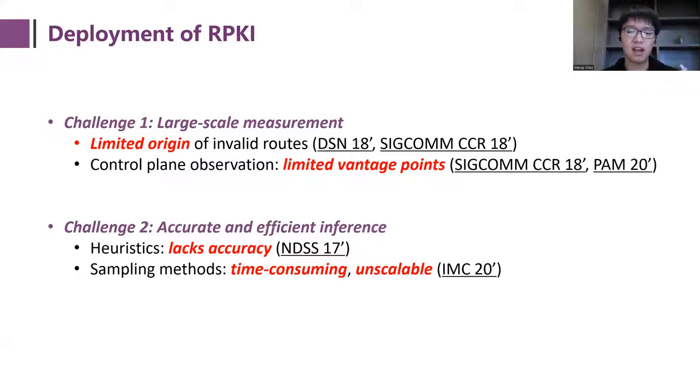First, in the data collection part, there are not enough observations to make large-scale measurement. Most work lack data on control plane vantage points, which means that they can only observe the propagation of invalid routes on the routers that make their routing table public, which limits the number of vantage points and narrows down the measurement range. The second is that the inference methods have problems in their accuracy and efficiency. These two challenges make the existing measurement either limited to a small range or have inaccurate results.